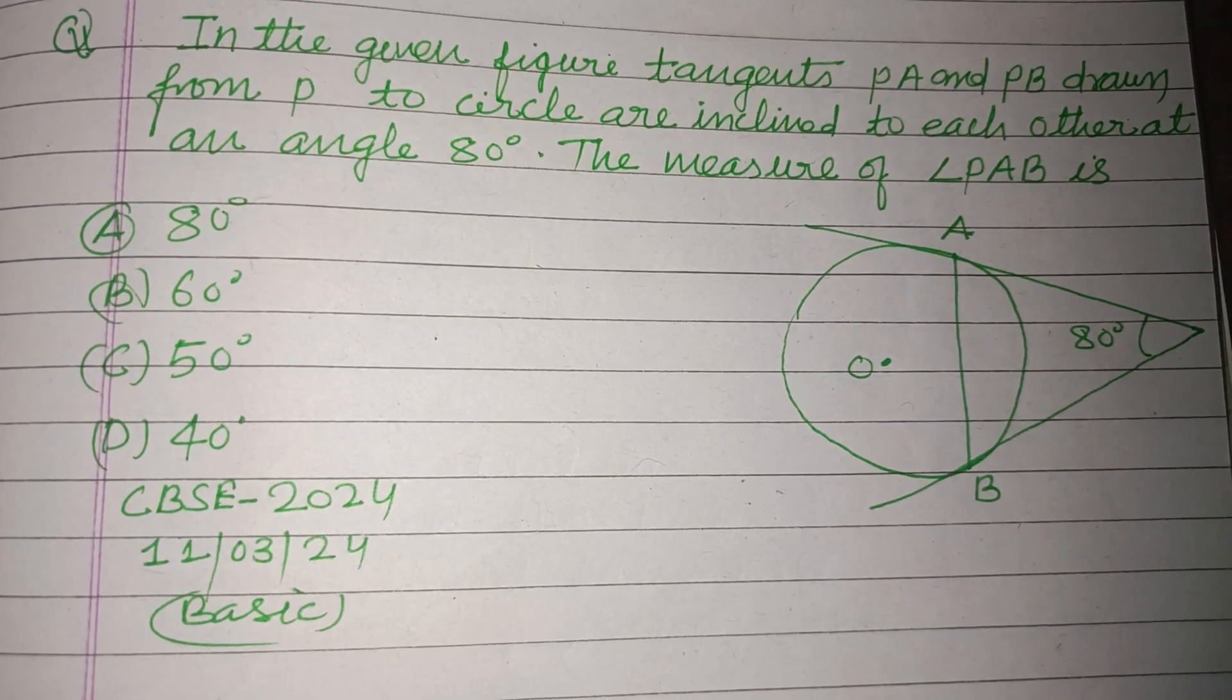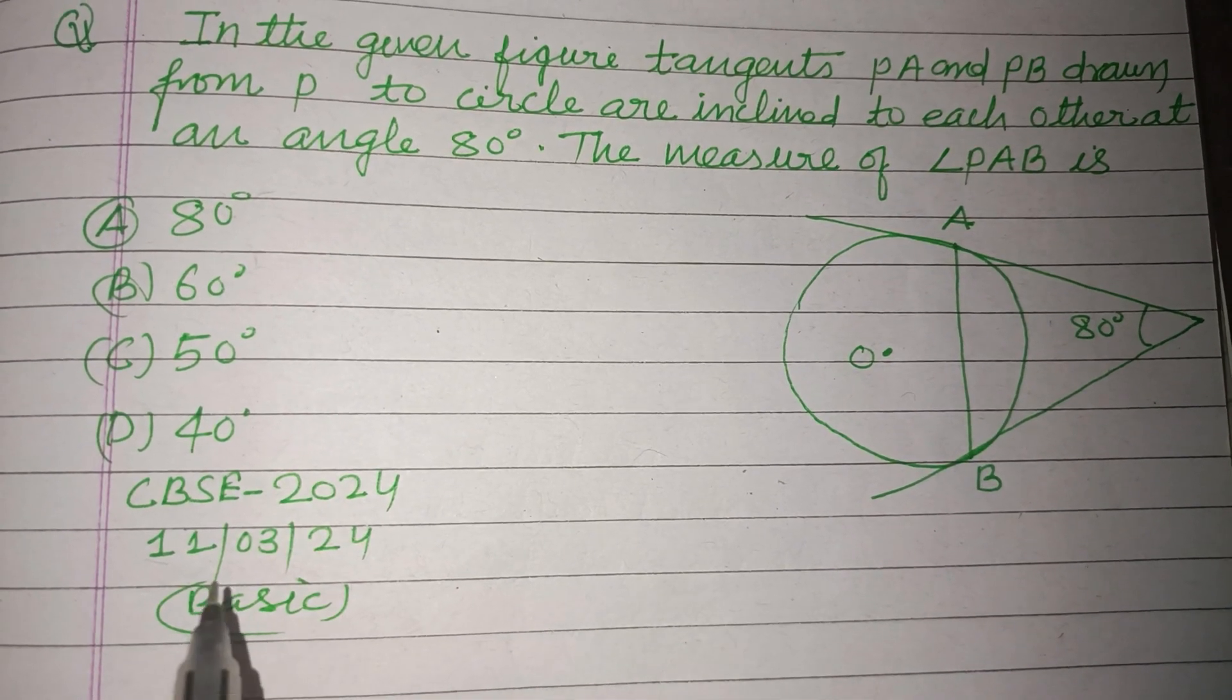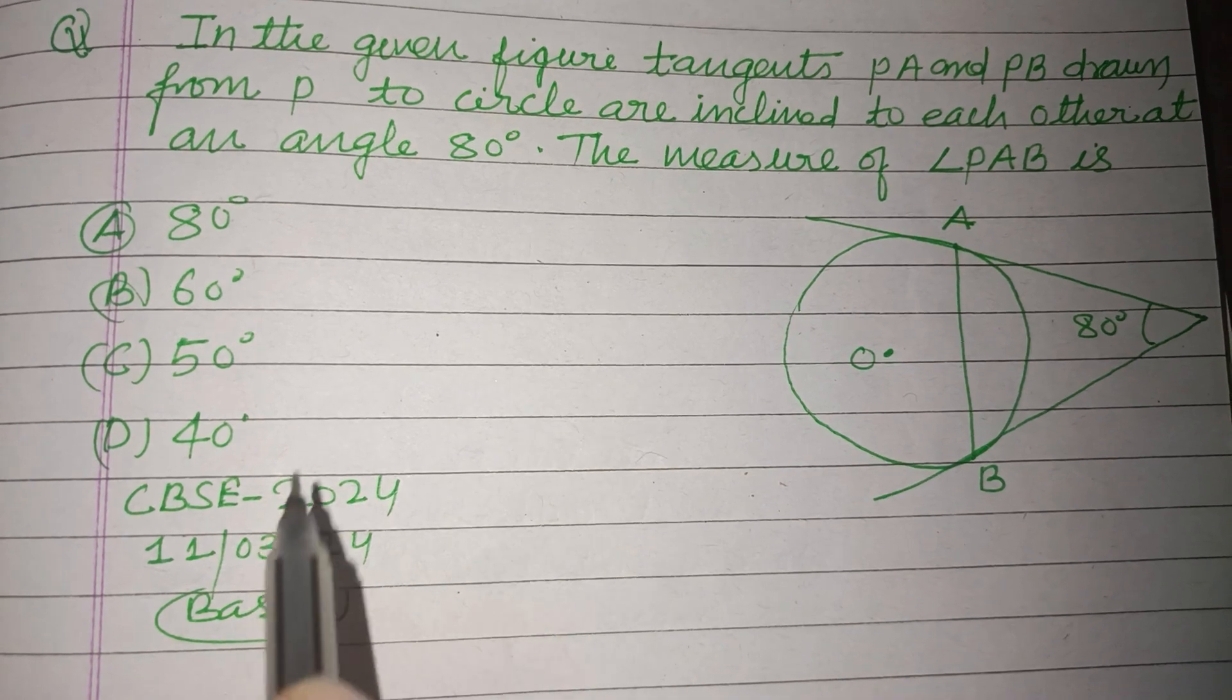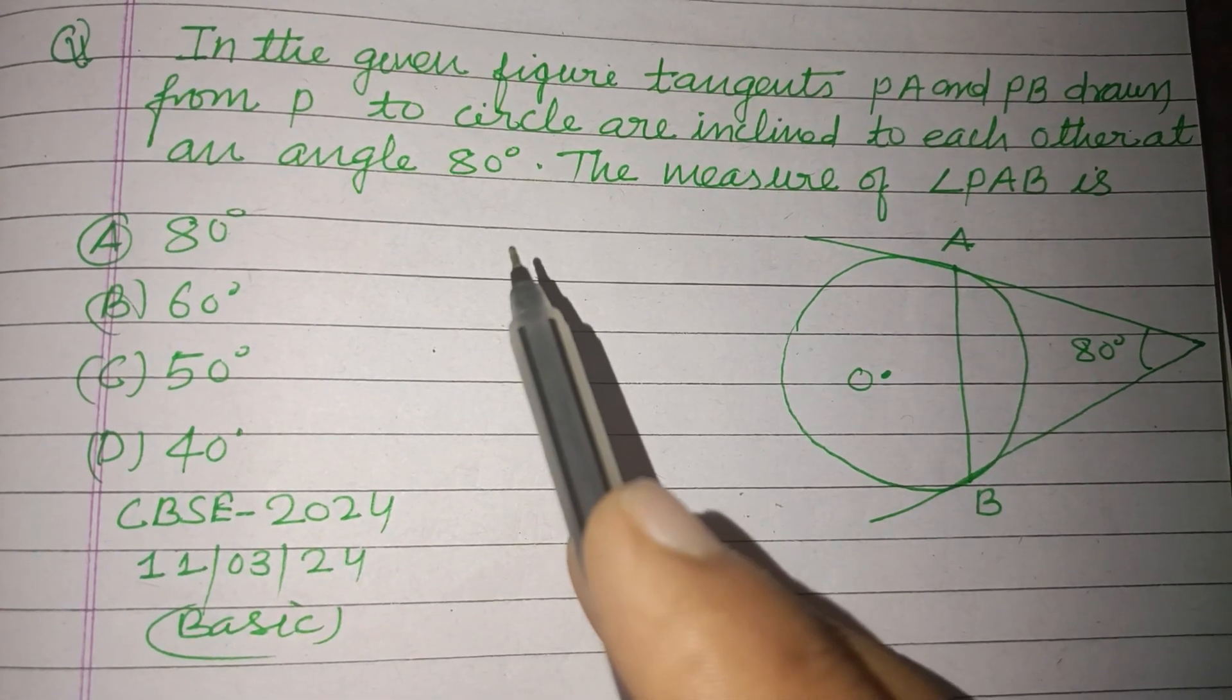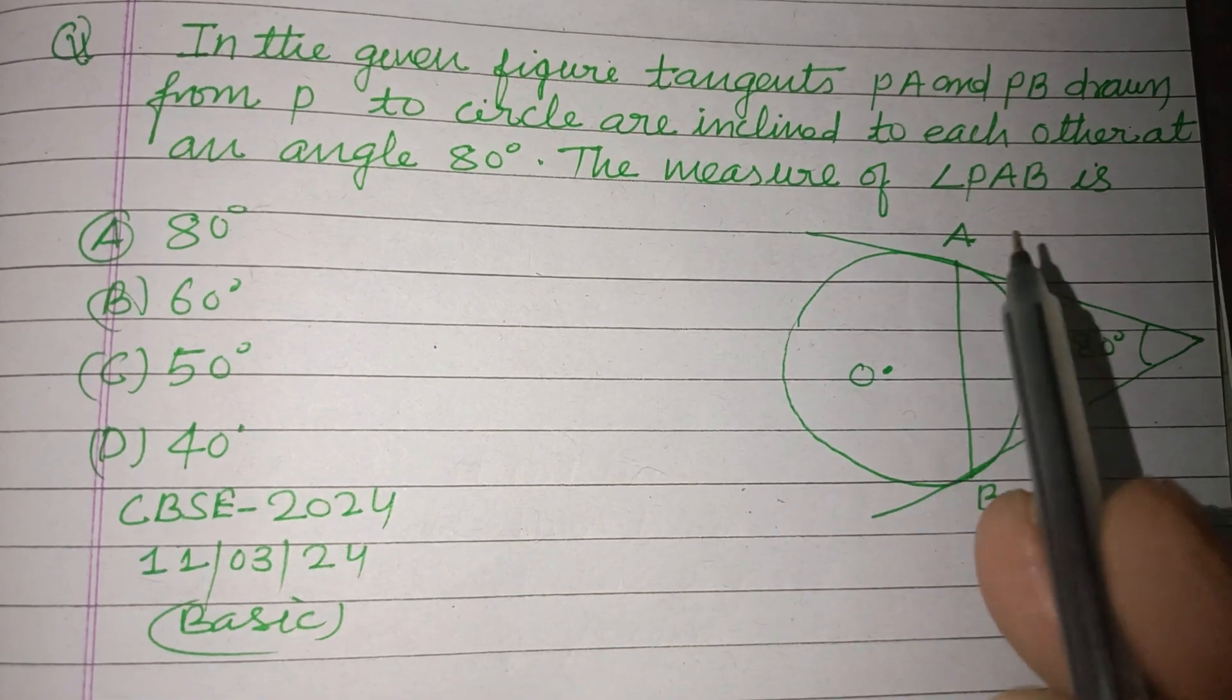Hello viewers and welcome to this YouTube channel. This is a question from CBSE board exam 2024. In the given figure, tangents PA and PB are drawn from a point P to a circle and are inclined to each other at an angle